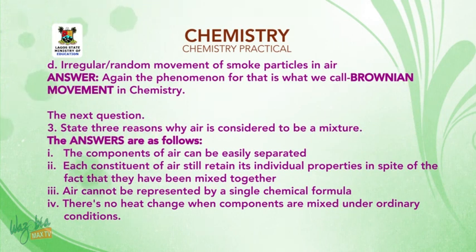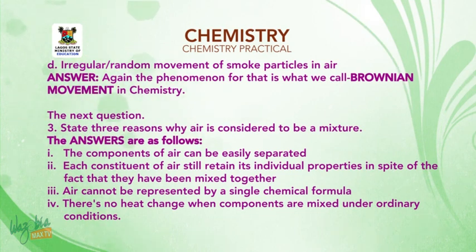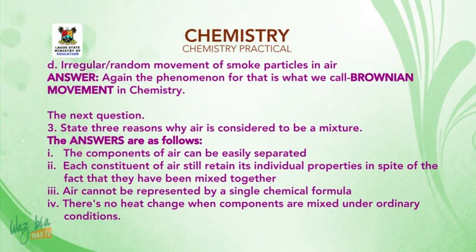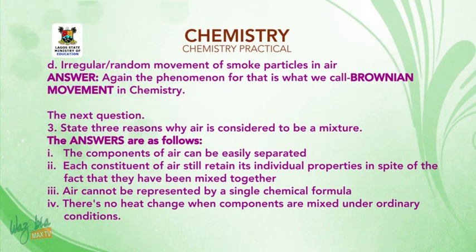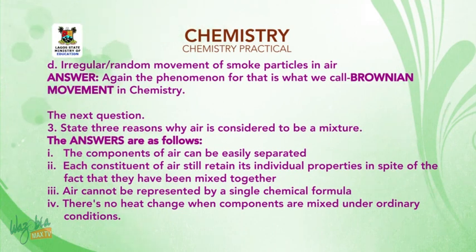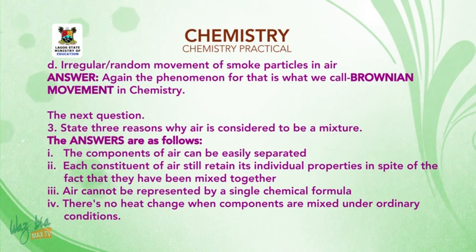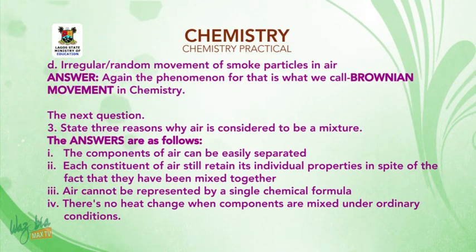The next question: state three reasons why air is considered to be a mixture. The answers are: number one, the components of air can be easily separated. Number two, each component of air still retains its individual properties in spite of being mixed together. Number three, air cannot be represented by a single chemical formula. Number four, there is no heat change when components of air are mixed under ordinary conditions.